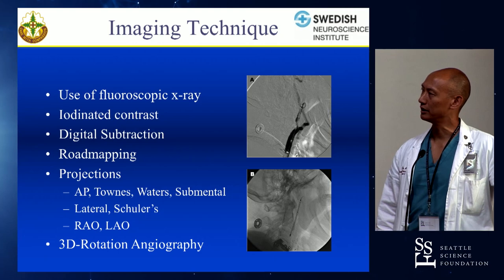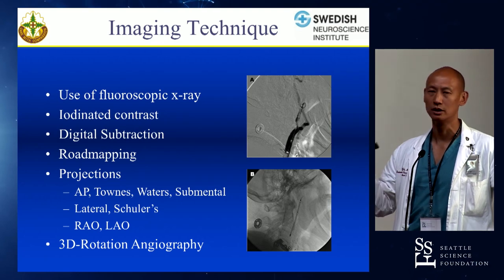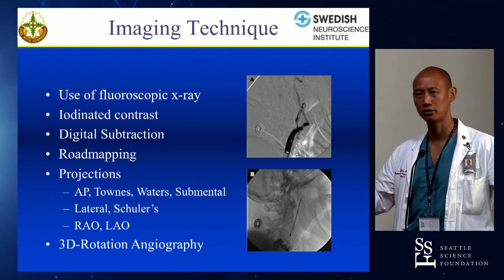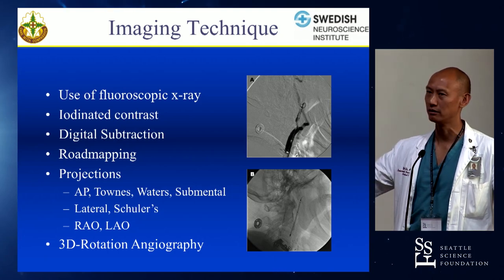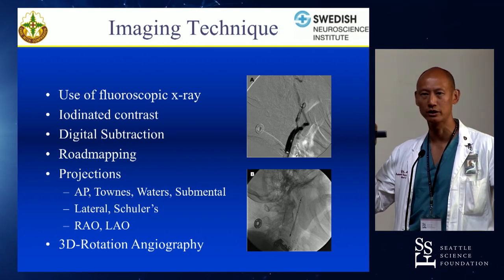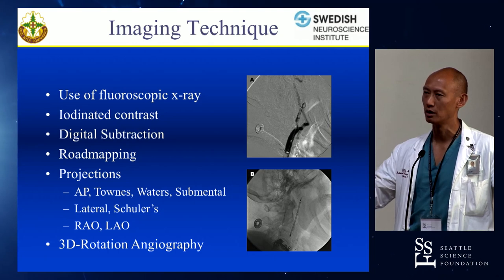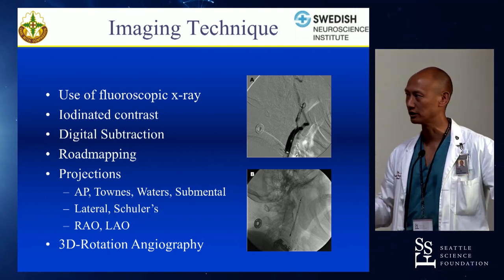After that subtracted background grays out, you can inject your contrast and the dye becomes black upon a gray background. With the ability to take that digital subtraction background, inject the dye, and create what's called a roadmap, the actual run of dye inverts its image and becomes a white image, through which you can see the black of your microcatheter or microwire superimposed over the contrast outline of the vessels.